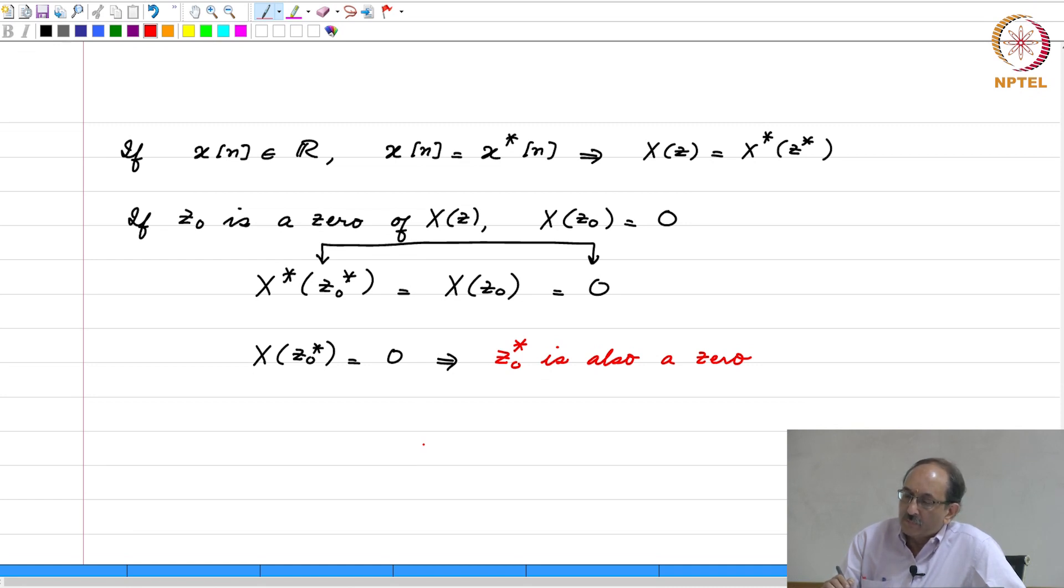So, this is another way of saying that, if you have a real valued sequence, its X of z, since we are restricting ourselves to the class of rational transfer functions, this is of the form P of z over Q of z and P and Q are after all polynomials in z and these polynomials will have real valued coefficients. And when you study theory of equations, if you have a polynomial that has real valued coefficients, you are guaranteed that the roots will be in complex conjugate pairs. So, this is another way of arriving at the same result when you know the sequence is real valued based on the property that X of z is the same as X star of z star.